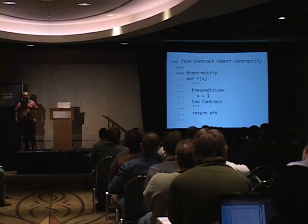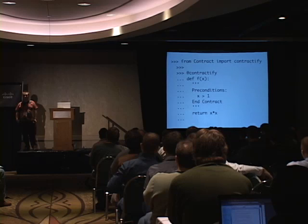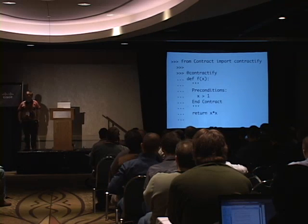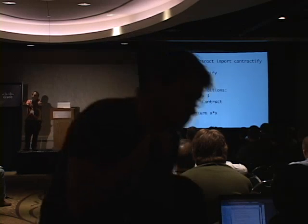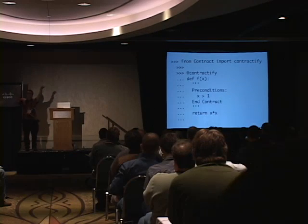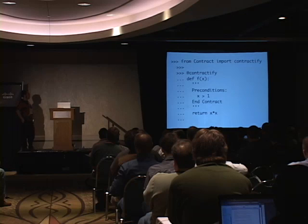Having this working with several people on a fairly large software project means that as soon as something breaks, you know immediately where it was coded — because your function was returning the wrong thing, so the problem was further upstream. This all just keeps the complexity under control.